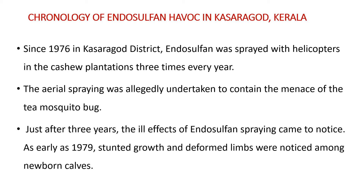Since 1976, in Kasaragod district, Endosulfane was sprayed by helicopters over cashew plantations three times every year. This aerial spraying was allegedly undertaken to control the tea mosquito bug. Just three years later, the ill effects of Endosulfone spraying came to notice. As early as 1979, stunted growth and deformed limbs were noticed among newborn calves.